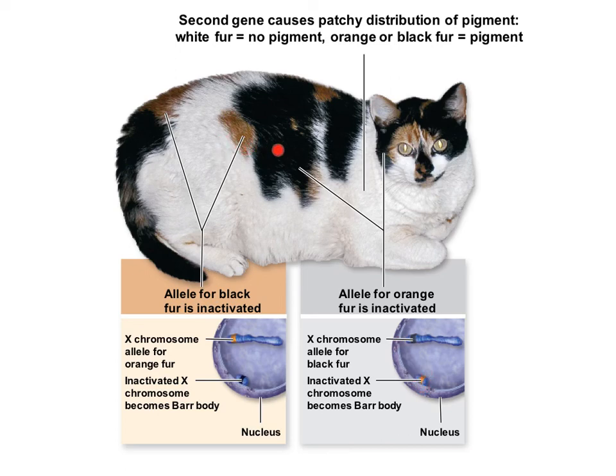This pattern only happens in females that are heterozygous, so they will have some cells that inactivated the X chromosome with the dominant allele and some cells that inactivated the X with the recessive allele. Since this is a random pattern, even two genetically identical cats will have a different color pattern, because X inactivation happens once the embryo is a few cells old and different cells will inactivate different Xs, resulting in different color patterns.